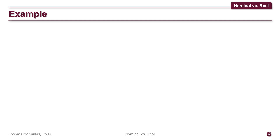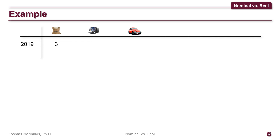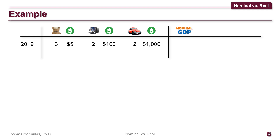Let's now see an example. Again, the economy produces rice, computers, and cars. In 2019, they produced three bags of rice, two computers, and two cars. The price of each of those was $5, $100, and $1,000 respectively. According to this data, the nominal GDP can be calculated at $2,215. Now for 2020, the prices and quantities were those, and they yield a nominal GDP of $3,325.